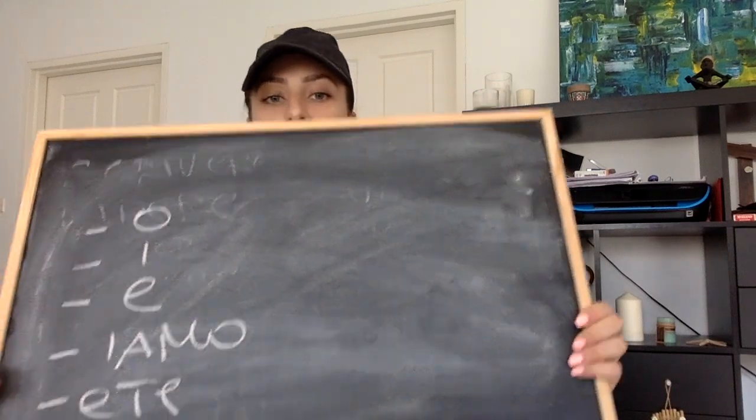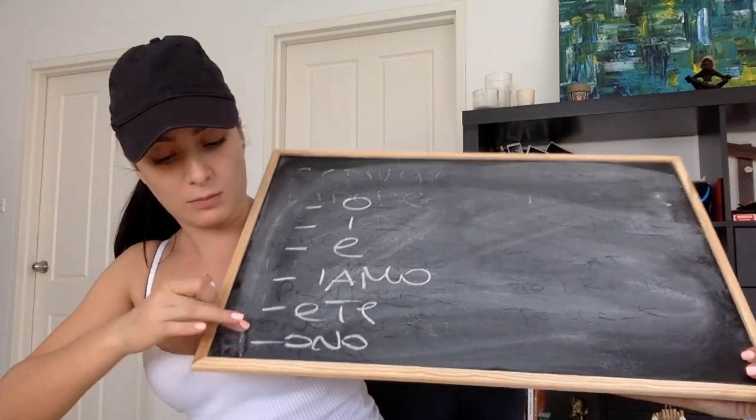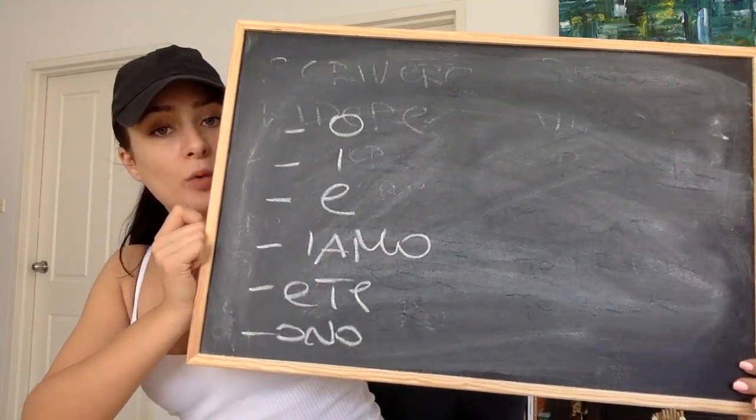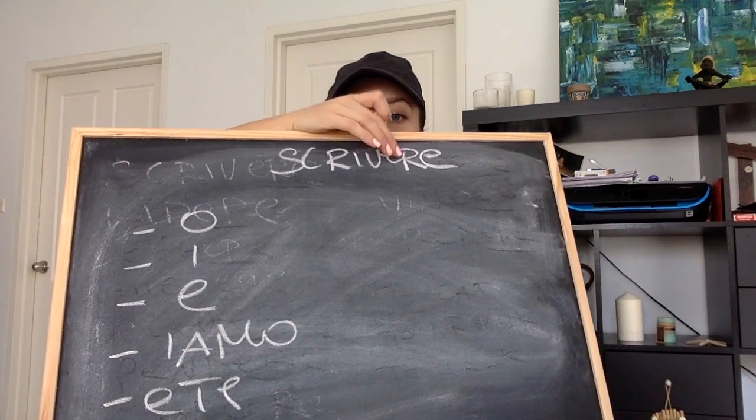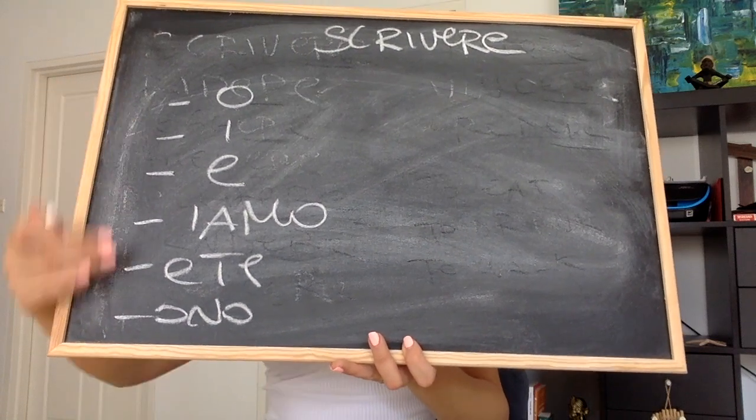In Italian, the endings for -ere verbs are: O, I, E, YAMO, ETE, ONO. What we do is take the verb 'scrivere' — to write — which ends in -ere, and these endings each correspond to a subject doing the action.